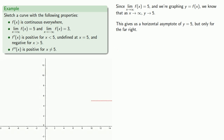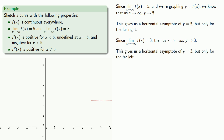Similarly, since as x goes to minus infinity f of x equals 3, then as x goes to minus infinity y goes to 3. This gives us a horizontal asymptote of y equals 3, but only for the far, far left of the graph.